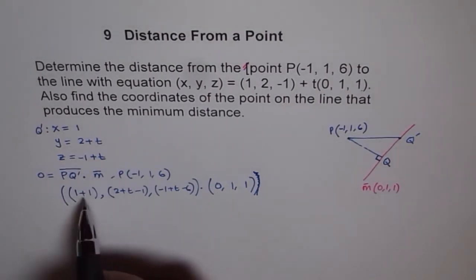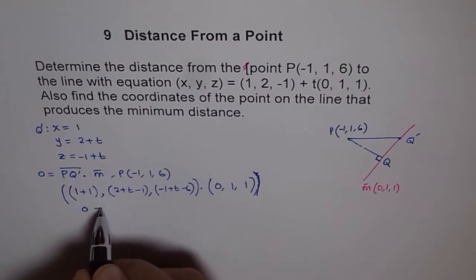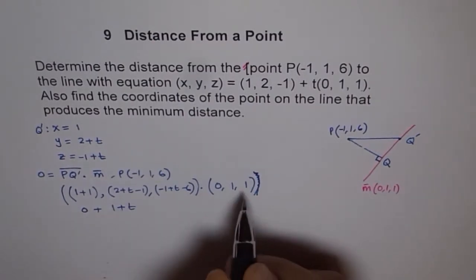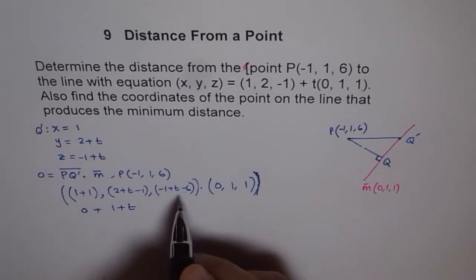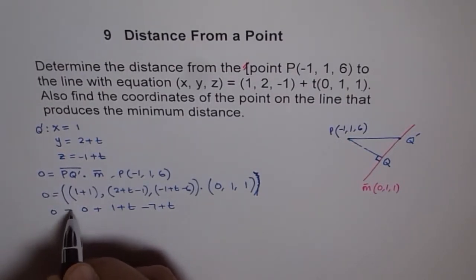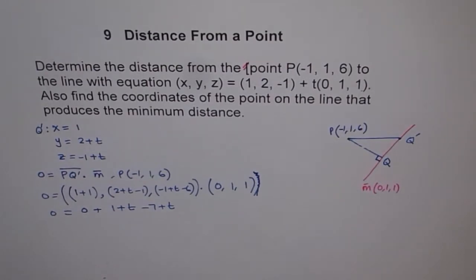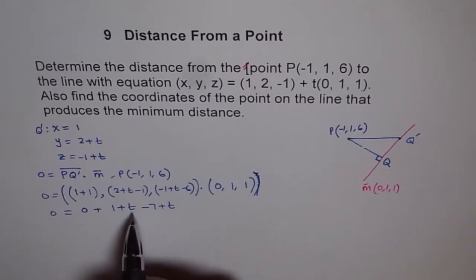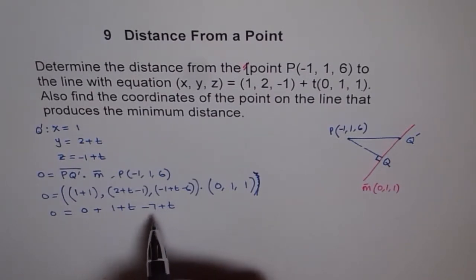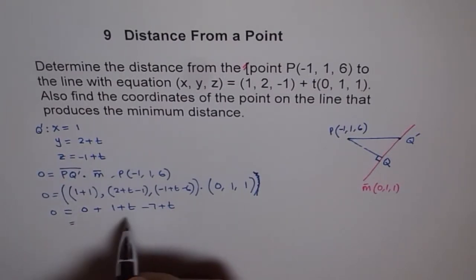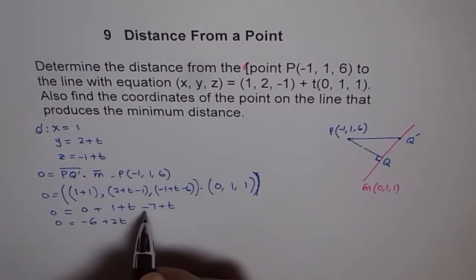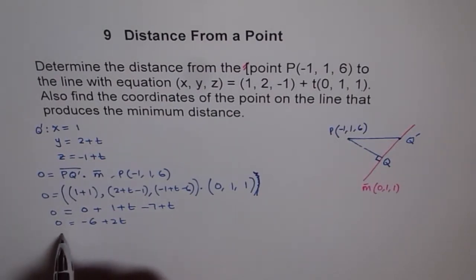Carrying out the dot product: the X term gives 0. With the 1 in Y we get 2 plus T minus 1, which simplifies to 1 plus T. With the 1 in Z we get minus 1 minus 6 plus T, which is minus 7 plus T. Setting the sum equal to 0: 1 plus T plus minus 7 plus T equals 0, giving 2T minus 6 equals 0, so T equals 3.